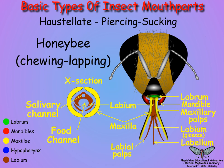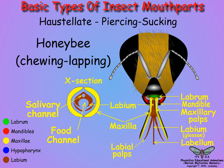Although most Hymenoptera are mandibulate, the honey and bumble-bees have a chewing-lapping mouth consisting of a maxillary labial tube for nectar intake, and basal mandibles for cutting plant parts, defense, and molding wax for comb formation in the hive.